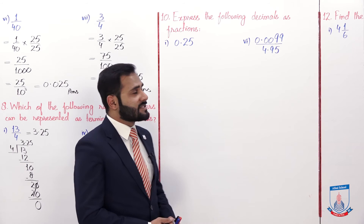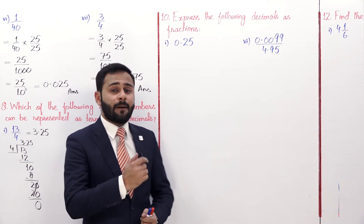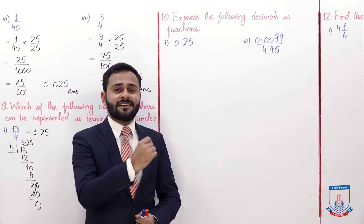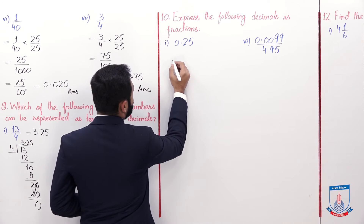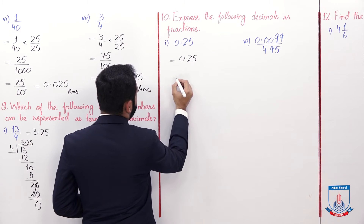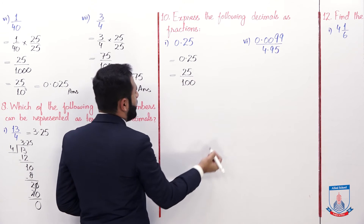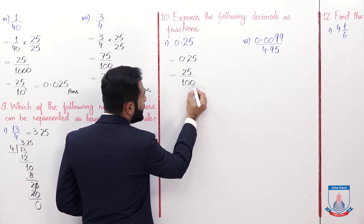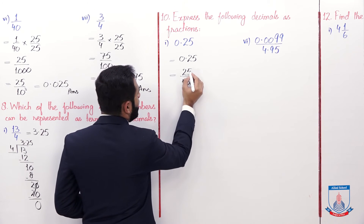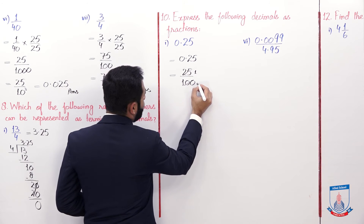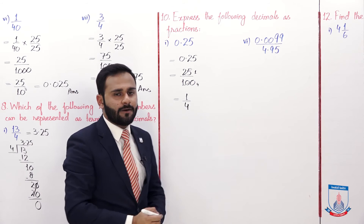Question number 10: express the following decimals as fractions in simplest form. For 0.25 - hum reverse process karenge. Point ke baad jitne bhi digits honge, utne 10 ki power se divide kar denge aur point remove kar denge. Point ke baad 2 digits hain, so 25 over 100. Simplest form: 25 ones are 25, 25 fours are 100, so 1 by 4 is the simplest form.